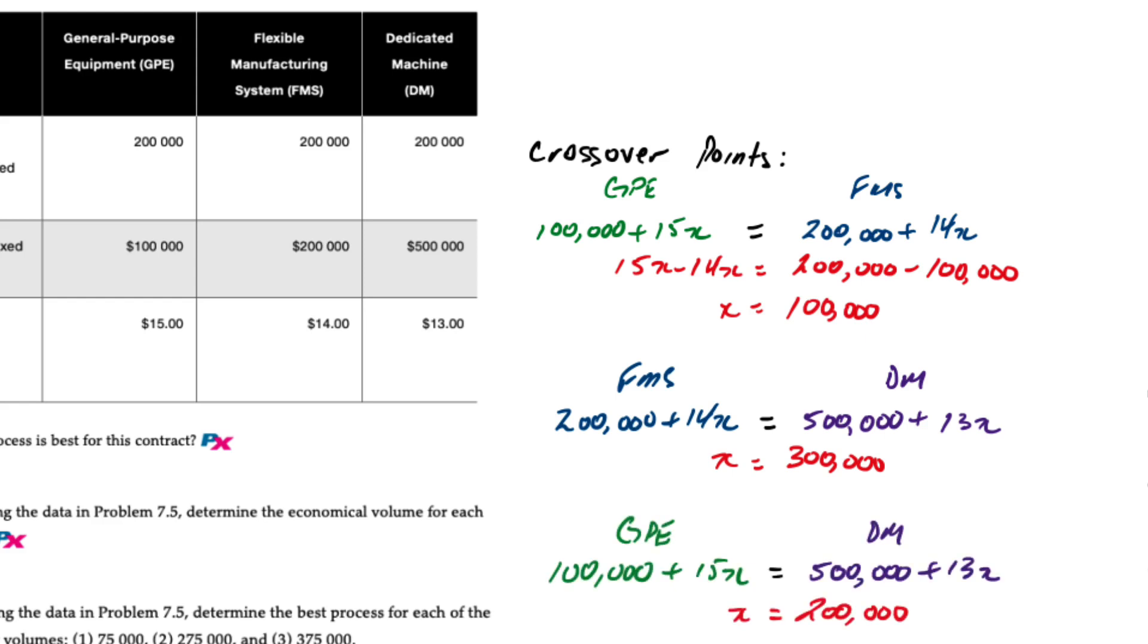Then we want to set GPE equal to DM, so we'll take 100,000 plus 15x and make that equal to 500,000 plus 13x, and that gives us a crossover quantity of 200,000 units.